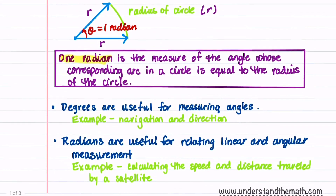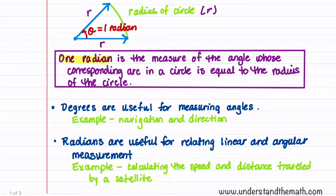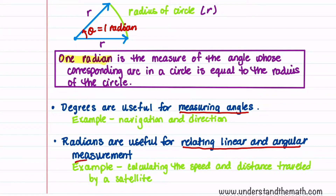Let's now talk about when we would use degrees and when we would use radians. In general, degrees are useful for measuring angles, such as you would do if you're working in navigation. Radians are useful for relating linear and angular measurement, as you might do if you're calculating the speed and distance traveled by a satellite.